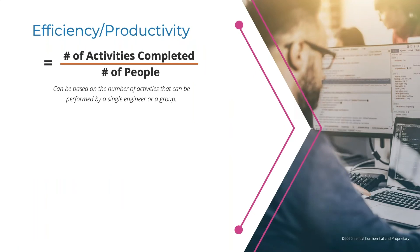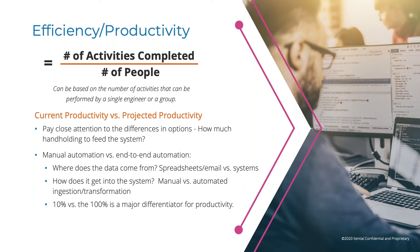The next metric is efficiency and productivity. This metric is primarily focused on the quantity of people involved in and required to perform any manual steps that still remain once you've automated. To calculate this metric, you take the same number of activities used for the workload unit cost metric and divide it by the number of people who need to participate in any manual steps. More specifically, I'm talking about steps that require human interaction like data inputs, adding configuration variables, performing reviews like pre and post checks, doing approvals, or interactions with OSS systems to either get data or input data.